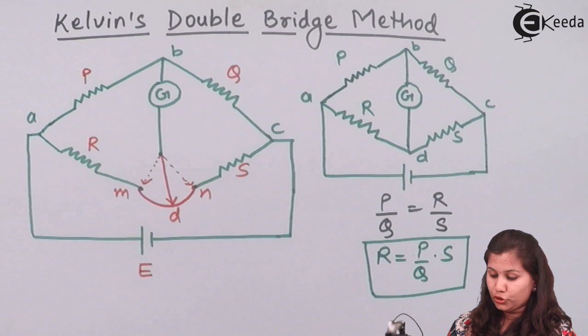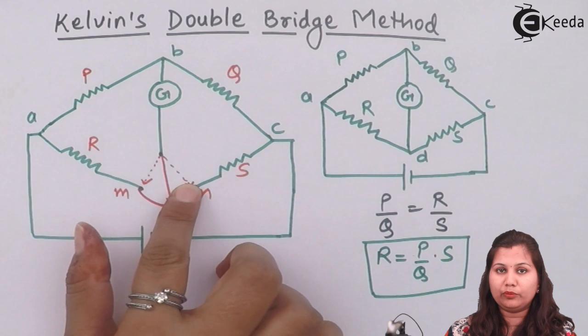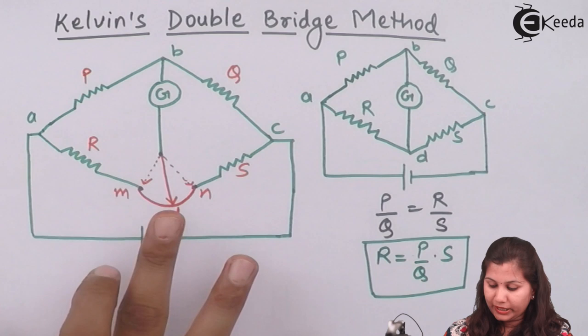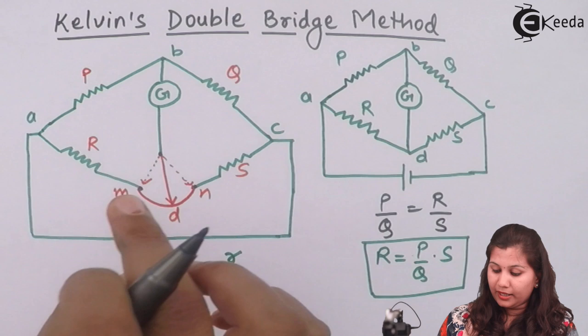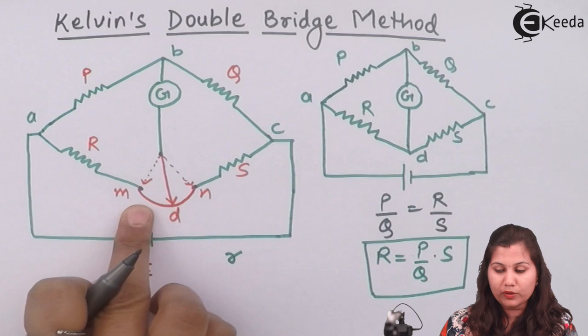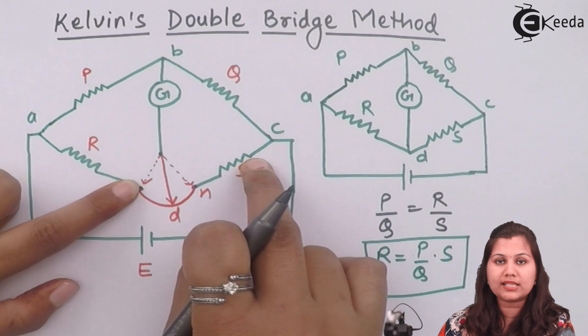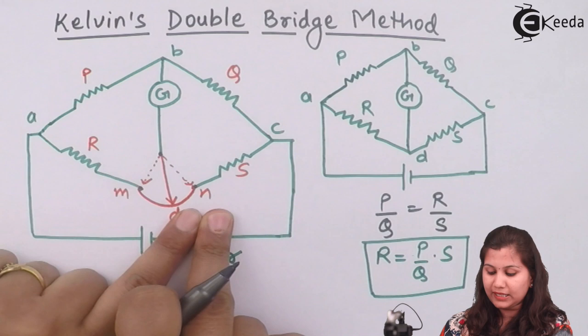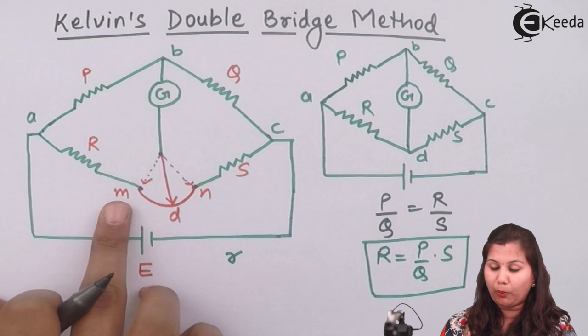In this modification, in between R and S we are considering a connecting lead and want to measure its resistance. This connecting lead has a resistance value small r. The galvanometer can be connected either at point M or at point N. When connected at point M, the resistance of the connecting lead is added to the standard resistance. When connected at point N, it is added to the unknown resistance.